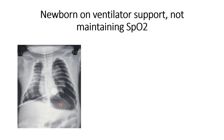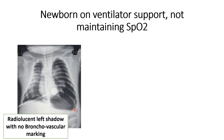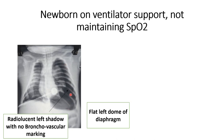Whenever there is a radiolucent shadow without bronchovascular marking, we should suspect air in the pleural cavity. You can also see the dome of the diaphragm is lower than the normal position and it is also flattened. So the curvature and position of the diaphragm are both altered. One abnormal radiological finding is the radiolucent left shadow without bronchovascular marking; another is the flattened left dome of the diaphragm lower than expected.